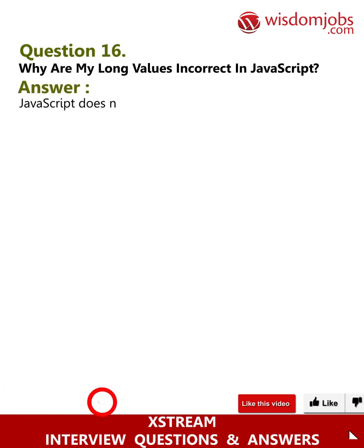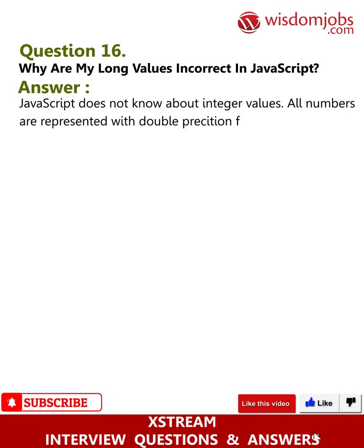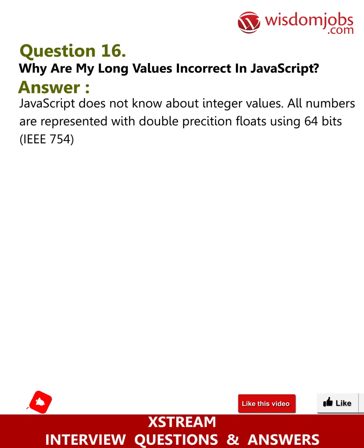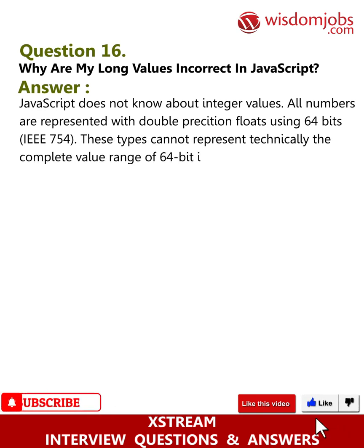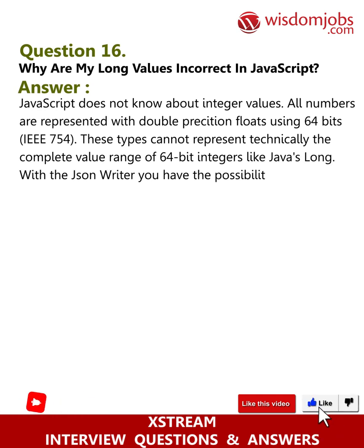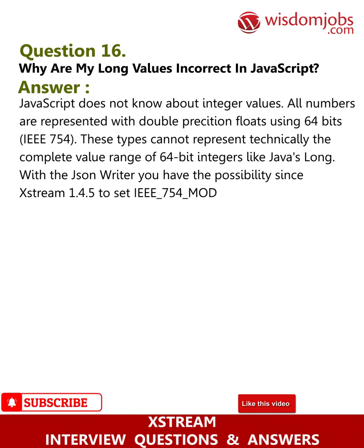Question 16: Why are my long values incorrect in JavaScript? Answer: JavaScript does not know about integer values — all numbers are represented with double precision floats using 64-bit IEEE 754. These types cannot represent the complete value range of 64-bit integers like Java's long. With the JSON writer you have the possibility, since XStream 1.4.5, to set IEEE_754_MODE to force...